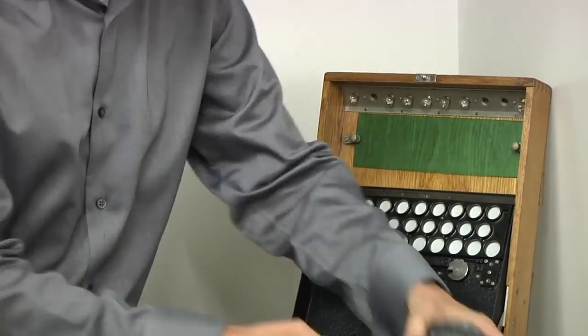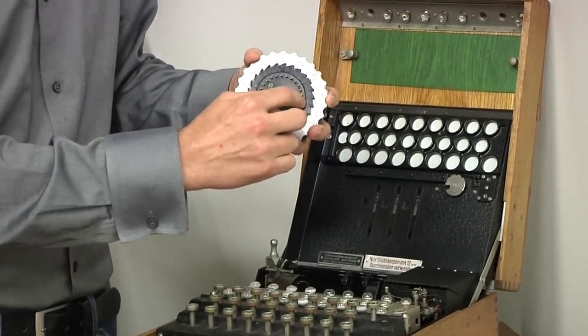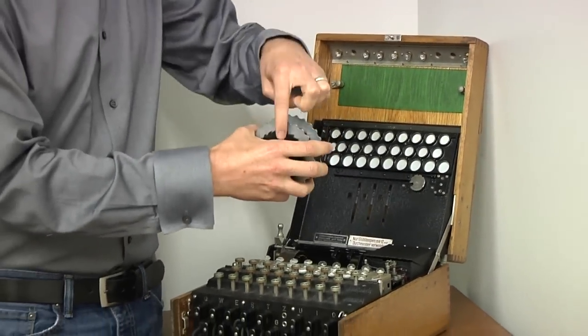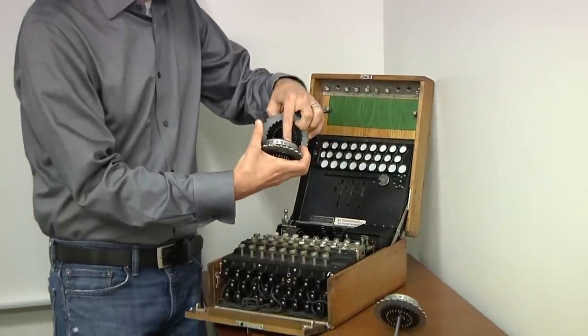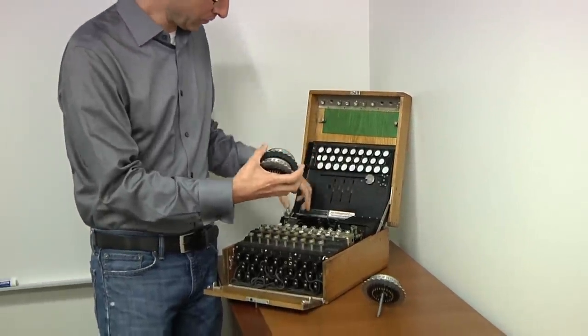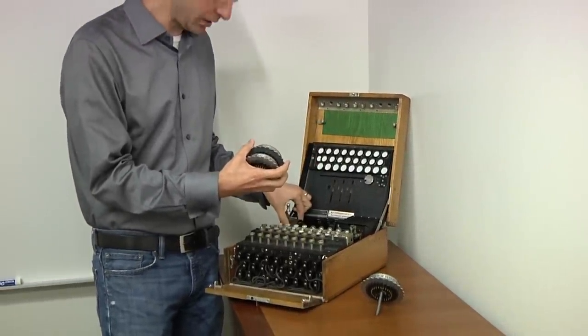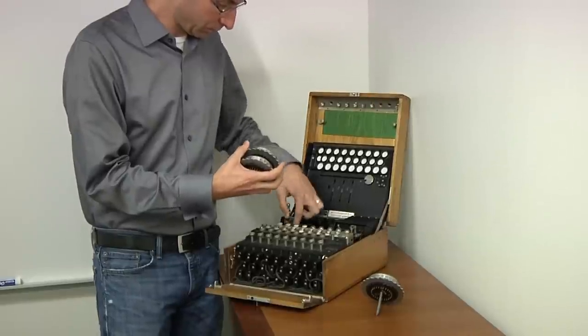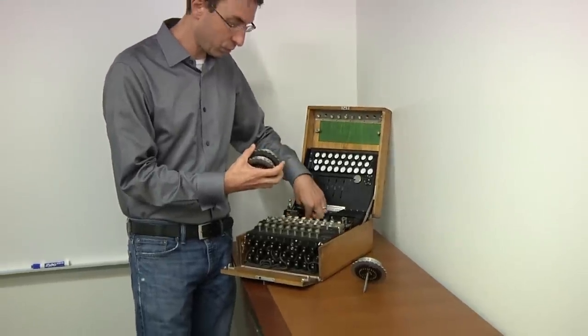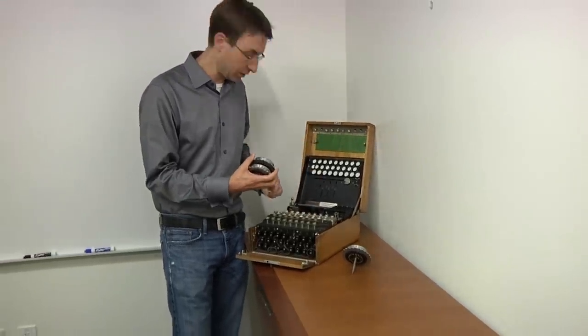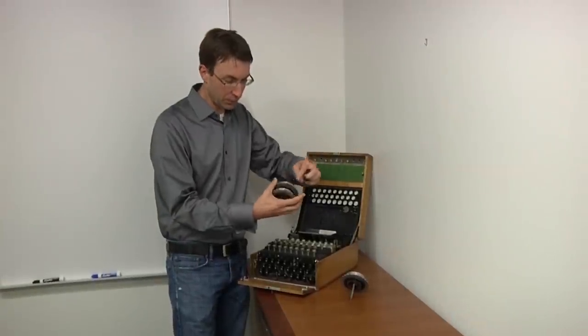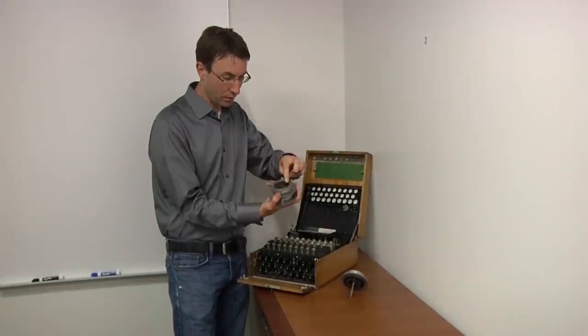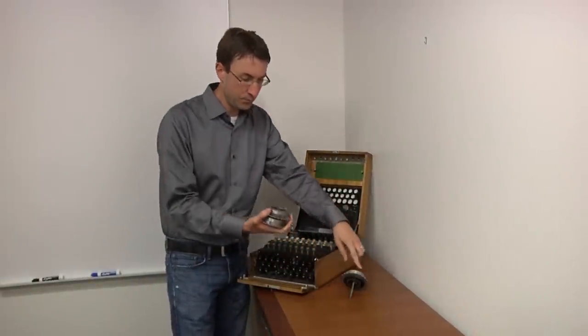When you have the three rotors together, when one pin is powered, the electricity goes through from that to the other side of the rotor, through this rotor. There's then a reflector, which is a simple device with 26 contacts and 13 wires connecting them. That means that the electricity that comes in one pin will come out the other set of three rotors at a contact.